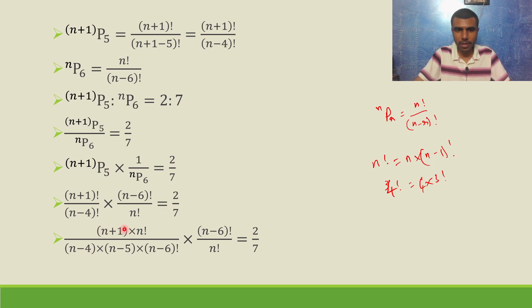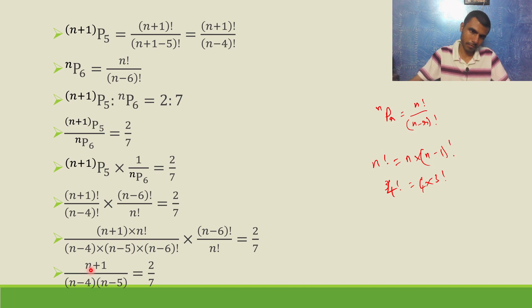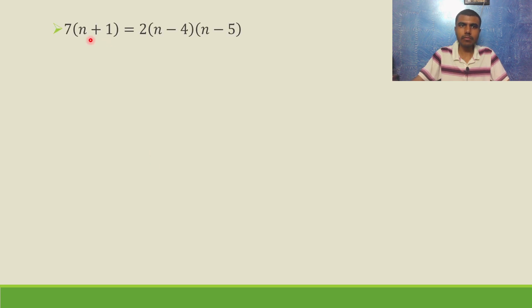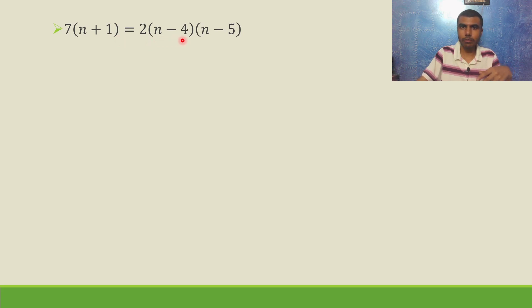What remains after cancellation is: (n+1) over (n-4) into (n-5) equals 2 by 7. All the factorials are gone. Now just simplify — cross multiply: 7 into (n+1) equals 2 into (n-4) into (n-5).